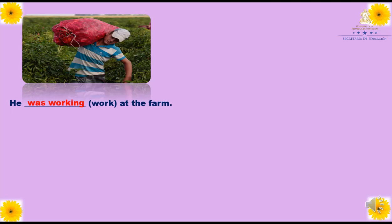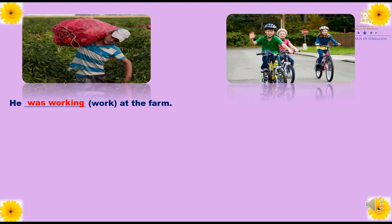The next: The children ___ (ride) bicycles. ¿Cómo nos quedaría la respuesta? Were riding. ¿Por qué were? Porque estamos hablando de los niños, son varios. Y en el verbo ride, recuerden que los que terminan en e se les tiene que quitar la e para agregar -ing. The children were riding bicycles. Los niños estaban montando bicicletas.